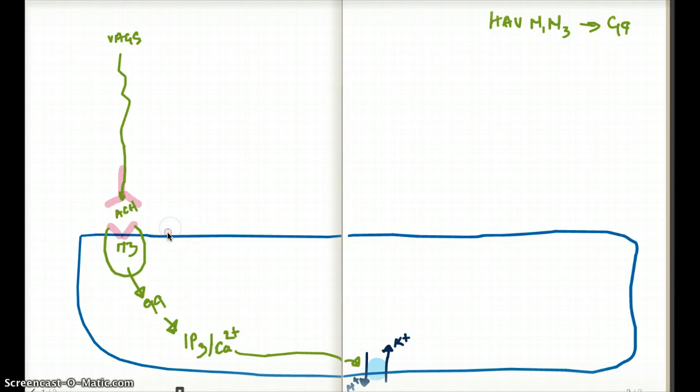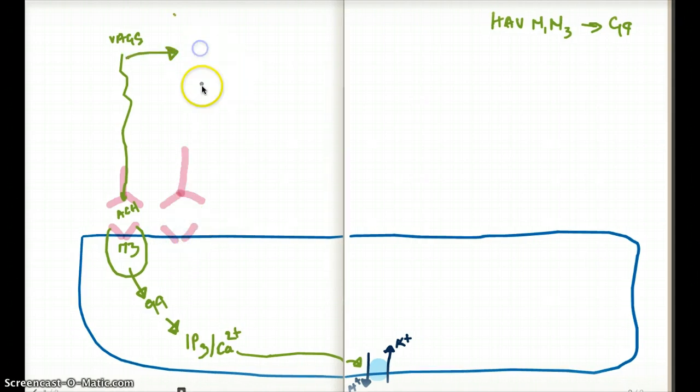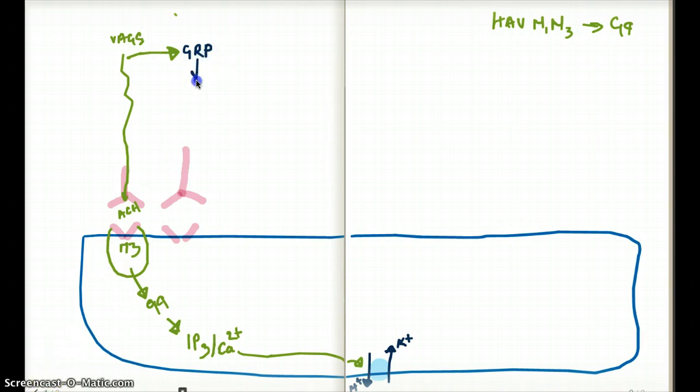The vagus is going to stimulate the G cells. It's going to release GRP, gastrin-releasing peptide. And GRP is going to come and stimulate the G cells. G cells is going to then release gastrin.